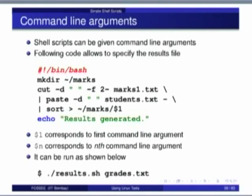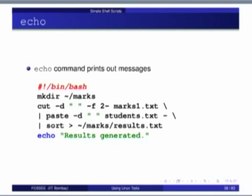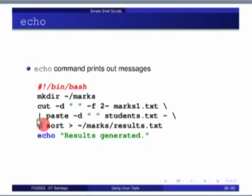Command line arguments: we might want to pass arguments to a script. For example, instead of hardcoding a filename in the script, we can specify it from the command line. We write dollar-1 ($1) in the place of the filename in the script, so each time you run the script you can provide a different filename.